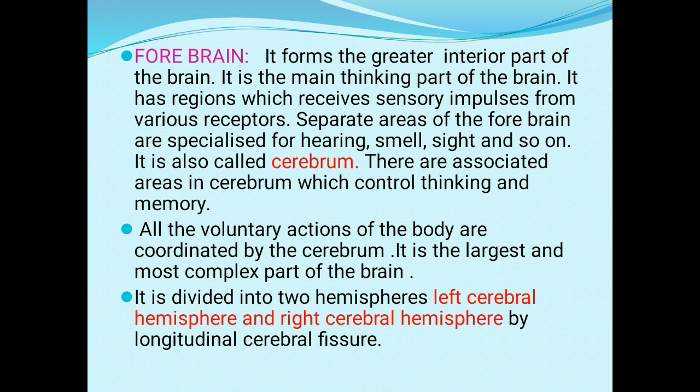The forebrain is the largest part of the brain, also known as the cerebrum. It is the main thinking part of the brain. It receives sensory impulses from various receptors, and the forebrain has separate areas for hearing, smell, sight, and so on. These areas control thinking and memory, so all voluntary actions are controlled by the forebrain. The cerebrum is divided into two hemispheres: the left cerebral hemisphere and the right cerebral hemisphere.